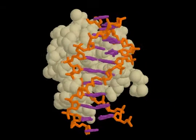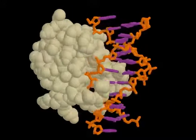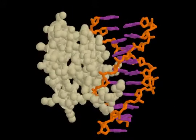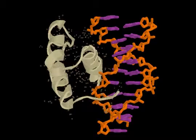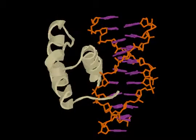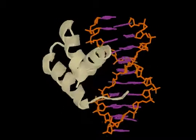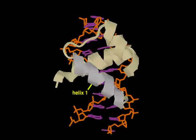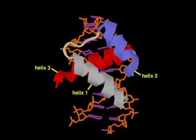Homeodomains are found in many transcription regulatory proteins and mediate their binding to DNA. A single homeodomain consists of three overlapping alpha helices packed together by hydrophobic forces.